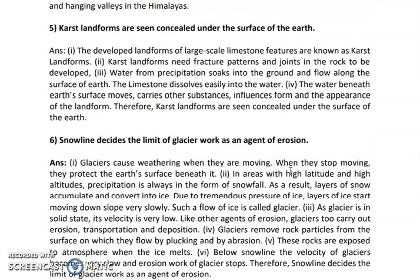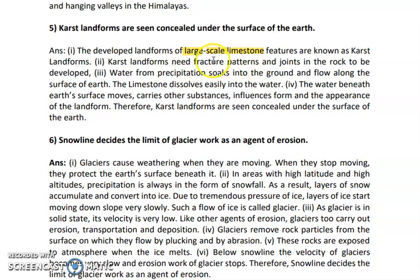Karst landforms are seen concealed under the surface of the earth. They are created because of underground water. Three important factors are required: a joint, carbon dioxide, and a sinkhole or water body. Karst landforms are found where there is large-scale limestone. The water from precipitation soaks into the ground and flows along the surface. Limestone dissolves easily into the water, and the water beneath the earth's surface moves and carries substances, creating these concealed landforms because of underground water.